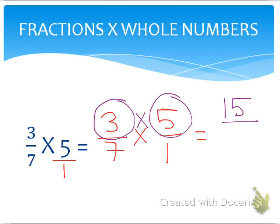Then I'm going to drop down below the fraction bar and multiply seven by one. I'm going to multiply the two denominators and get seven as my denominator in the product. So fifteen-sevenths, my apologies, is the product of three-sevenths times five over one.